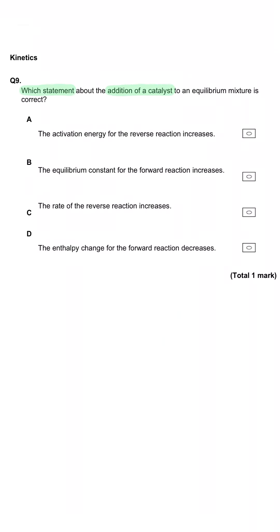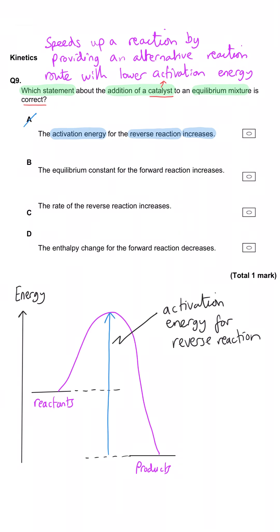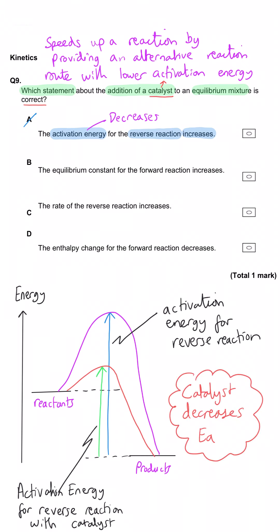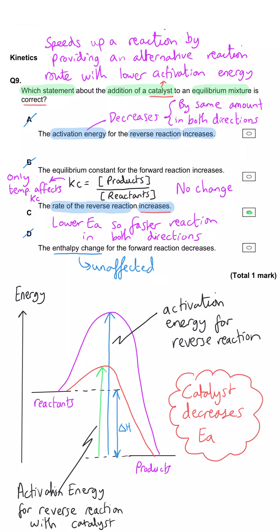Which statement about the addition of a catalyst to an equilibrium mixture is correct? A — the activation energy for the reverse reaction increases — is wrong: a catalyst decreases activation energy by the same amount in both directions, as seen from the reaction profile where the hill gets shallower. B — the equilibrium constant increases — is wrong: only temperature affects the equilibrium constant, not a catalyst. C — the rate of the reverse reaction increases — is correct: a catalyst increases the rate in both directions by the same amount, so the position of equilibrium stays the same. C is correct.